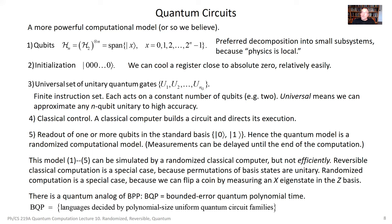These are the steps in a quantum model of computation. One remark: you might want the option of measuring a qubit mid-computation and then, conditioned on the outcome, deciding what operation to apply next — for example, to simulate the randomized classical model. You can simulate randomized computation using the quantum model by preparing a qubit in state zero, applying a gate that rotates it to a uniform superposition of zero and one, and then measuring in the zero-one basis to generate a random bit. But really there's no loss of generality in deferring measurements to the end.